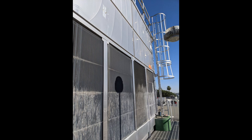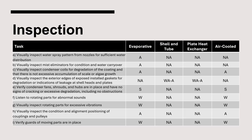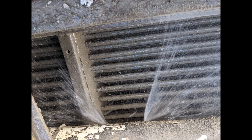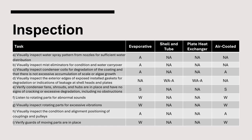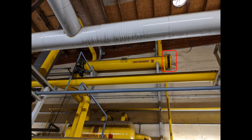Excessive scale buildup is visible on these mist eliminators and should be cleaned to ensure it doesn't worsen. Visually inspect the condition of the galvanized coating and scale buildup on condenser coils. These condenser coils are coated in scale, which reduces the efficiency of the unit. Next, visually inspect the exterior edges of exposed installed gaskets for degradation or indication of leaks. The edges of the gasket installed on this shell and tube condenser can be visually inspected at the heads.